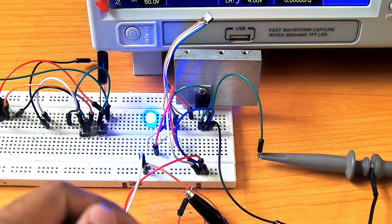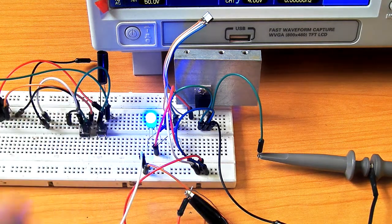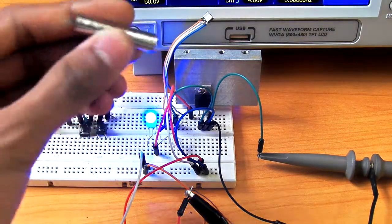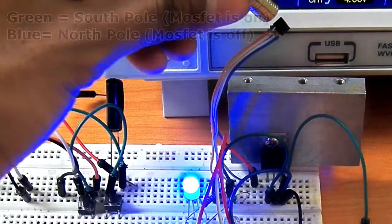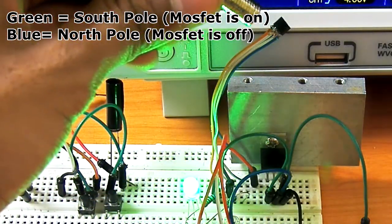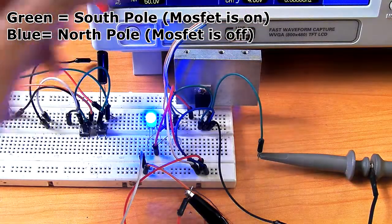Green light means there is a magnet detected. So let me show you what I mean. Here is a neodymium magnet. As you can see, it doesn't detect the north pole but it does detect the south pole.